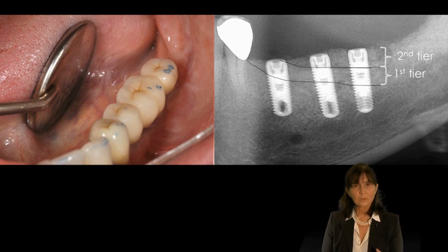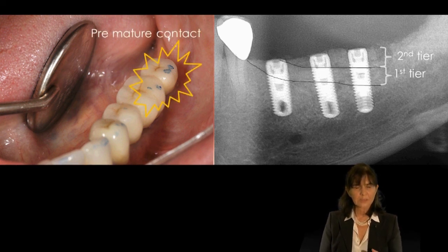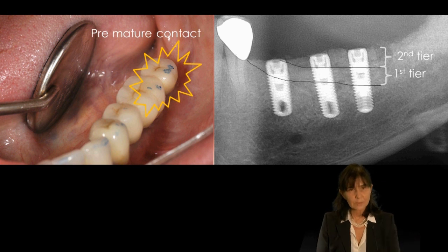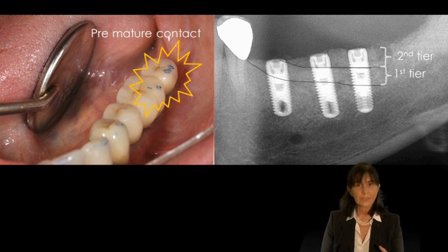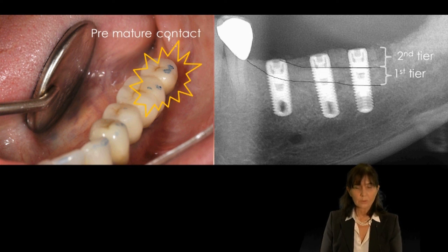At the time of rehabilitation, an imaginary line shows the original bone, the first tier, and the second tier. It is extremely important to prevent premature contact, as this reconstructed bone is very delicate and sensitive. A very accurate prosthesis is essential.